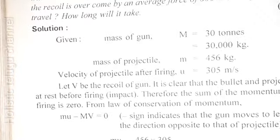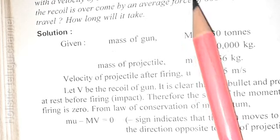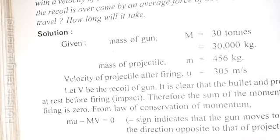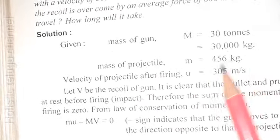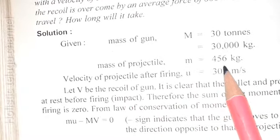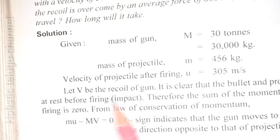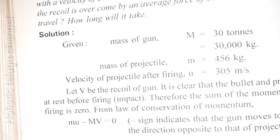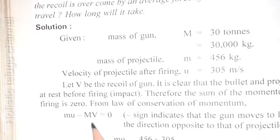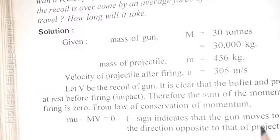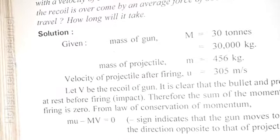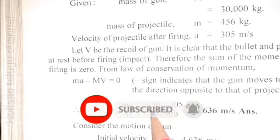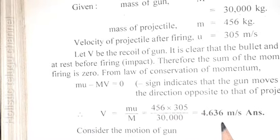Gun recoil problem: the mass of gun is 30 tons, mass of projectile M equals 456 kg, velocity of projectile after firing u equals 305 m/s. Using MU minus MV equals 0, the recoil velocity V equals MU divided by M, calculated as 4.636 m/s. The minus indicates the gun moves to the left — opposite direction to the bullet.